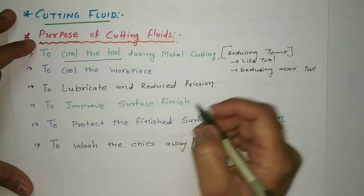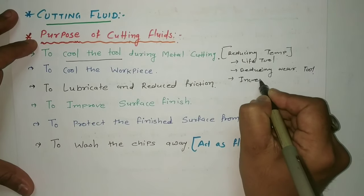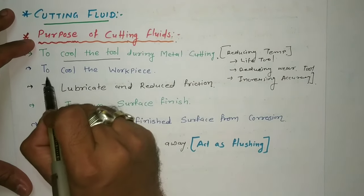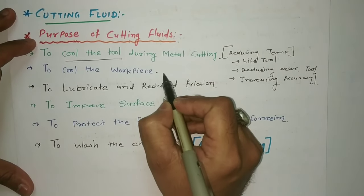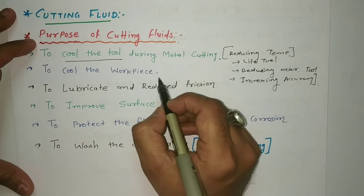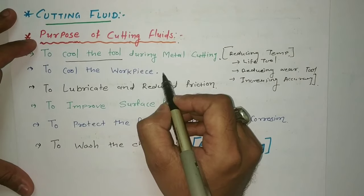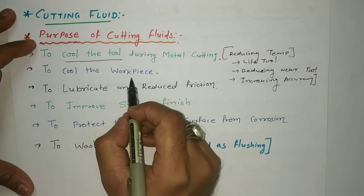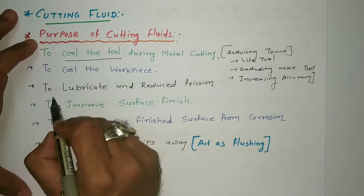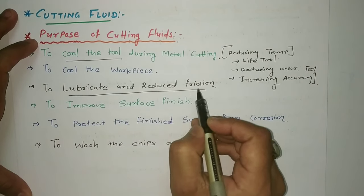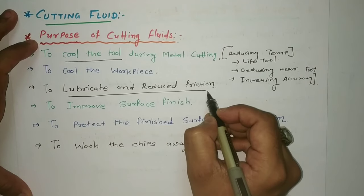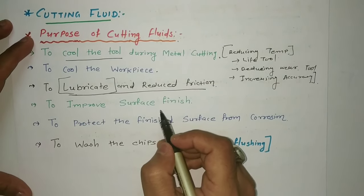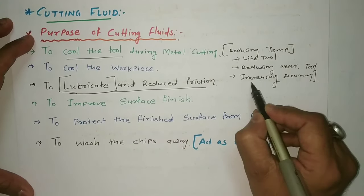This also increases the accuracy of the finishing. The second purpose is to cool the workpiece material — at higher temperatures, materials degrade their properties, so the cutting fluid helps control workpiece temperature. The third purpose is to provide lubrication and reduce friction. By reducing friction, it also reduces the generation of temperature, acting as a lubricant between the physical contact of the tool and workpiece.